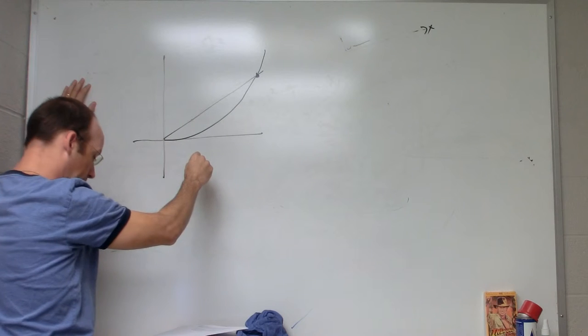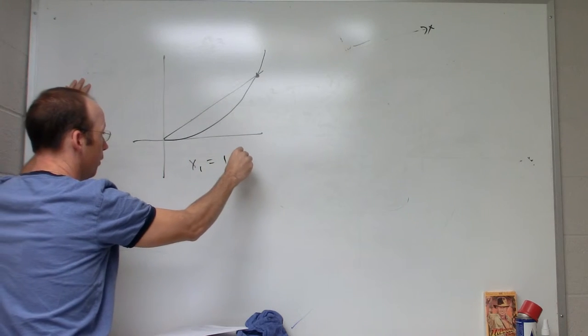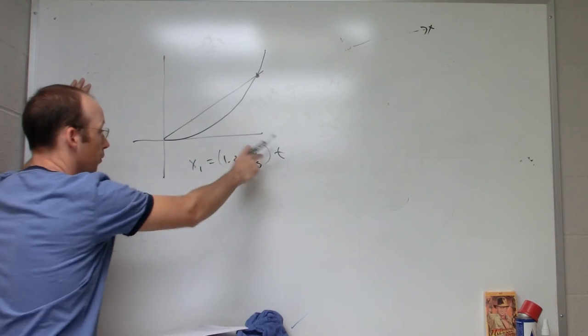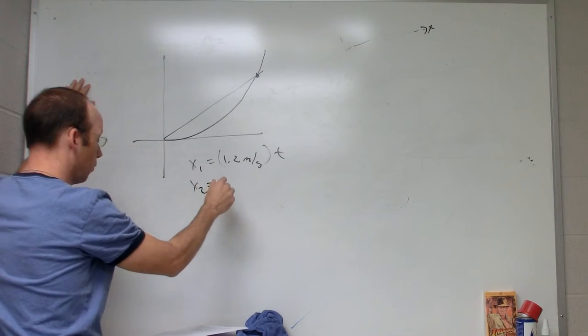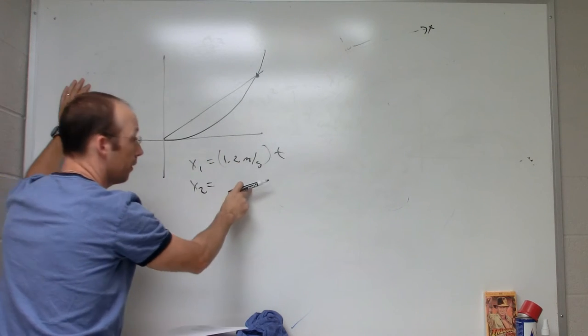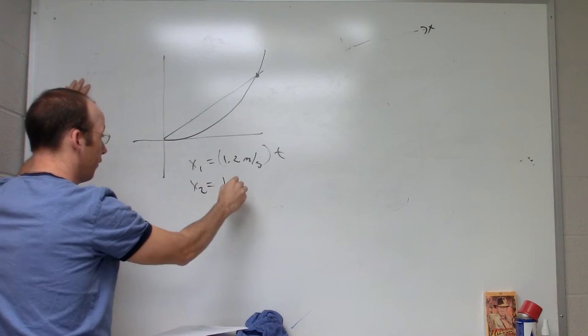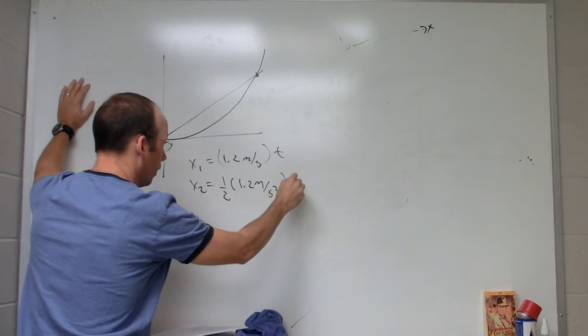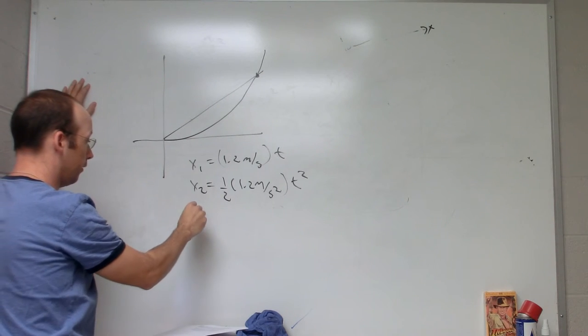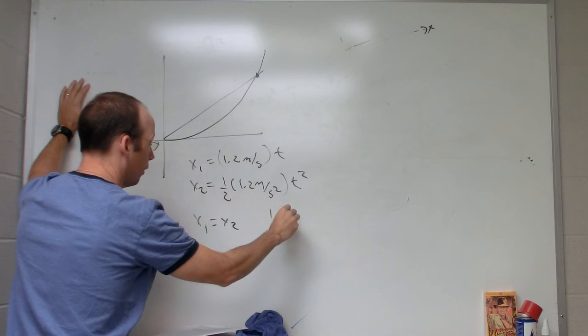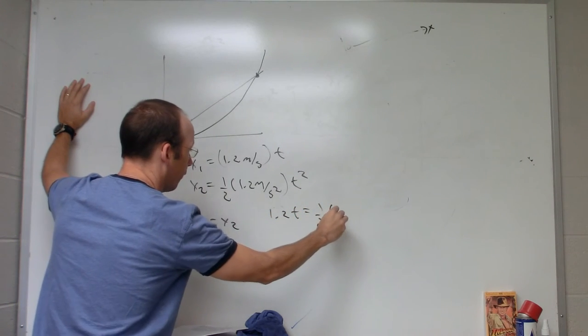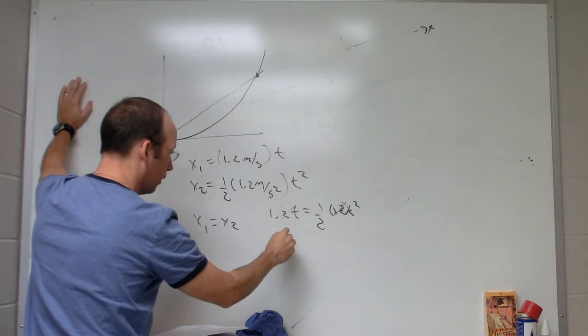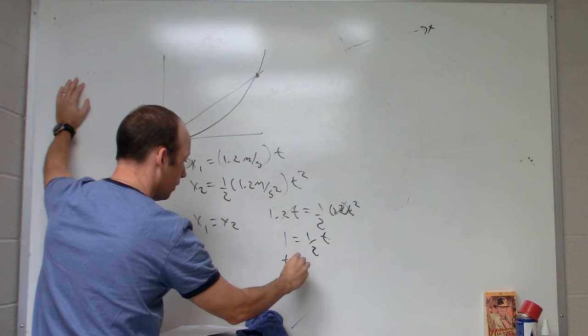I can write down an expression for the car. I'll call that x1. It's just going to be 1.2 meters per second times t - that's your constant velocity expression. At t equals zero, it's at zero. For the ball, it's going to be x2 equals - it started at x equals zero with initial velocity of zero - so it's just going to be one-half times 1.2 meters per second squared. I gave those two the same numerical value just for fun. T squared. Now I want to say one of these two things equal: x1 equals x2. So I get 1.2t equals one-half times 1.2t squared. I get 1 equals one-half t, so t equals 2 seconds.